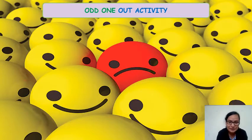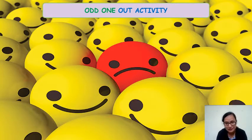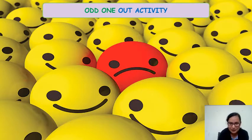You can see in this picture, all the other faces look similar. They are all yellow in color and they are all smiling. But the middle one, which is red in color, looks sad. So this one is odd among all.